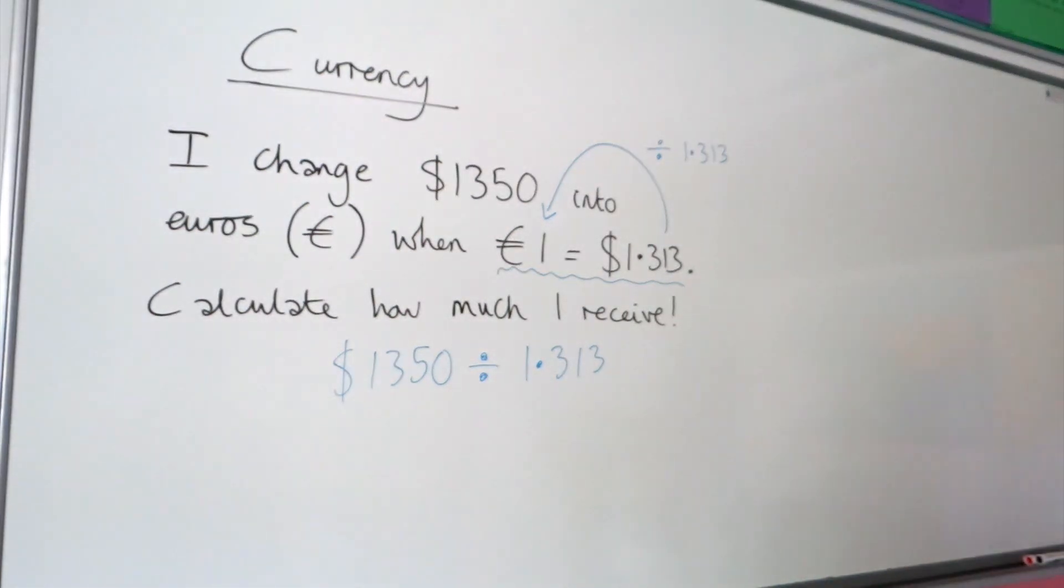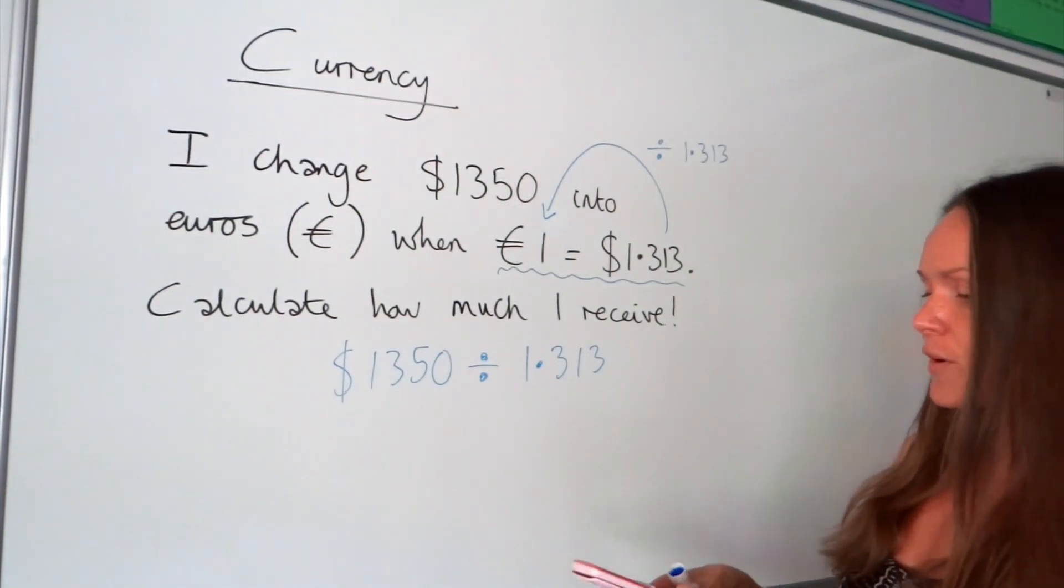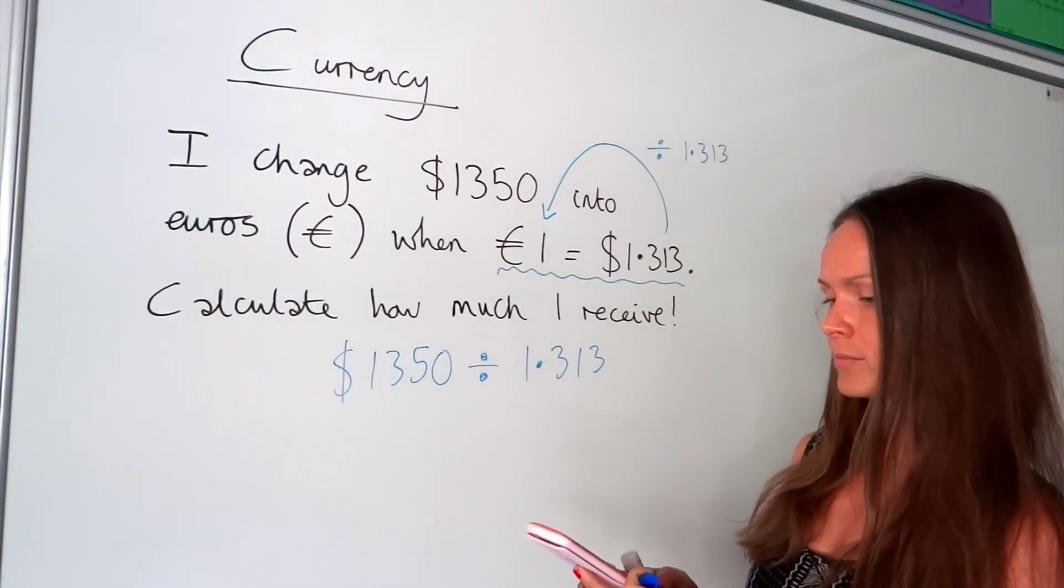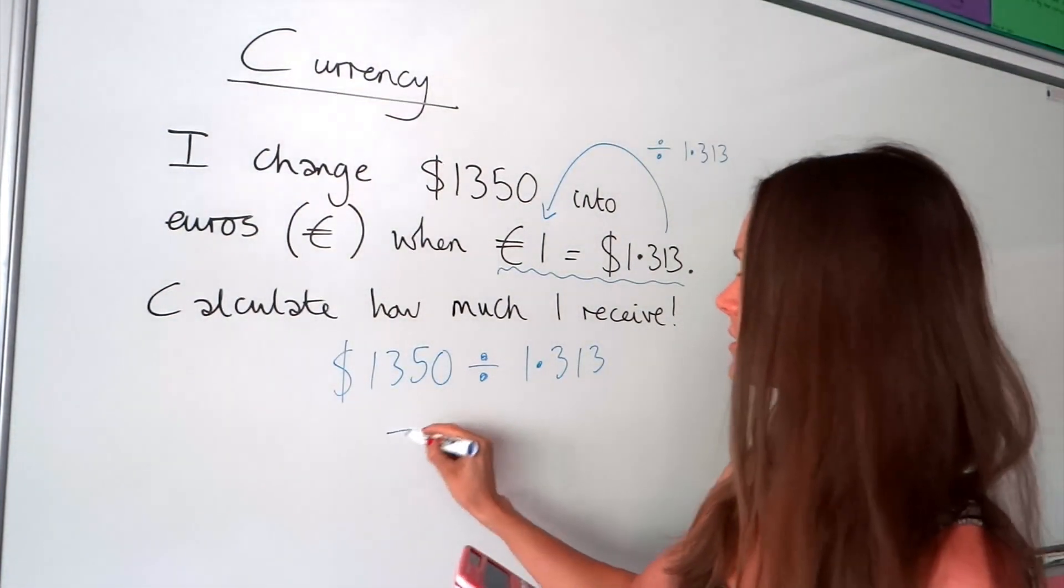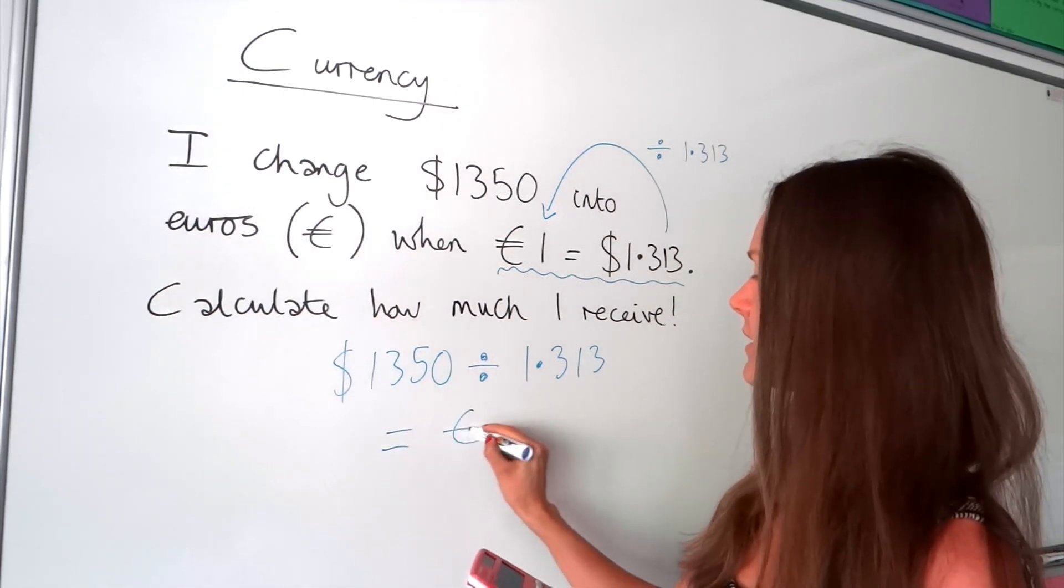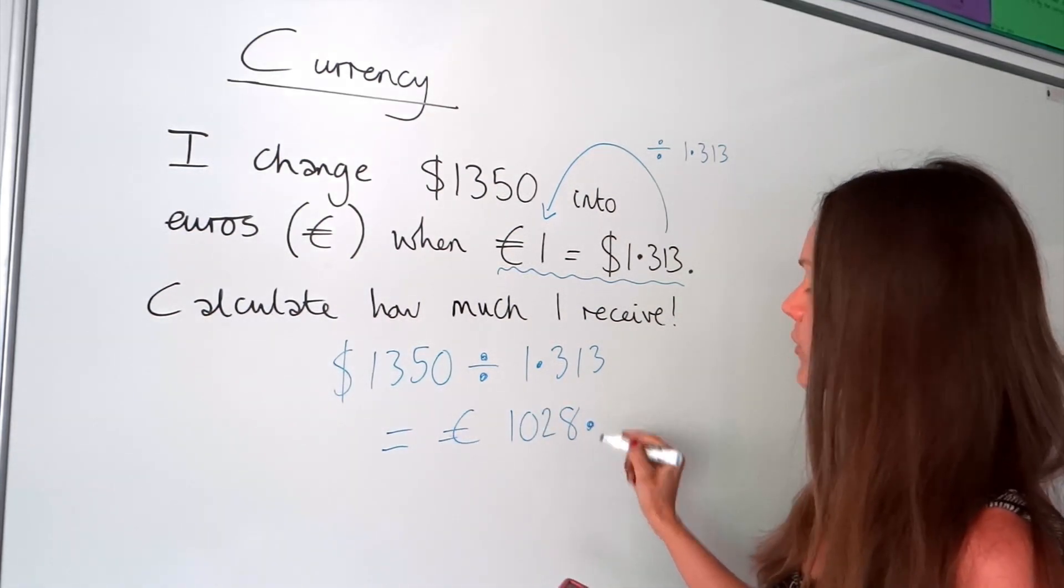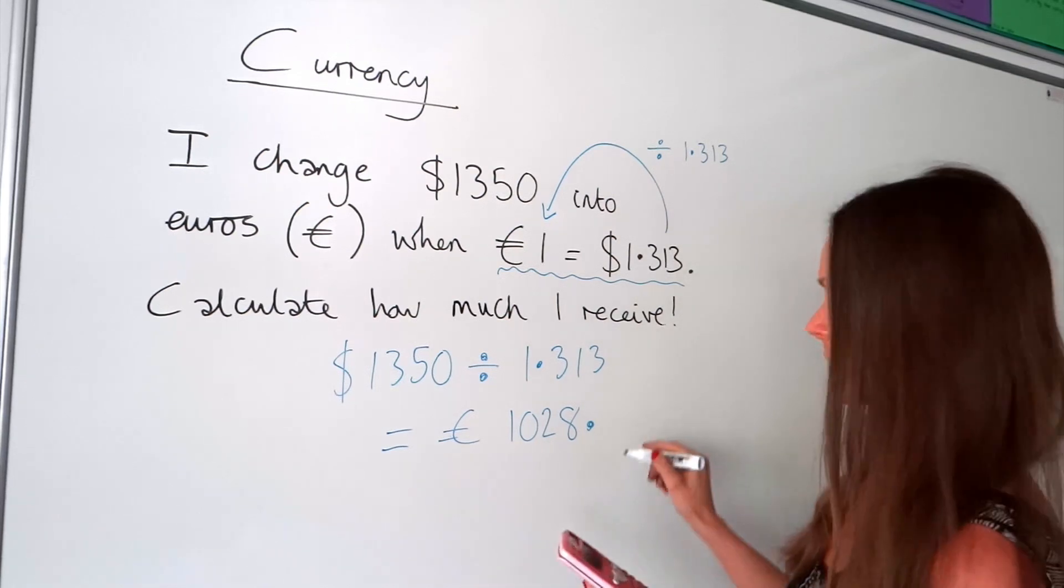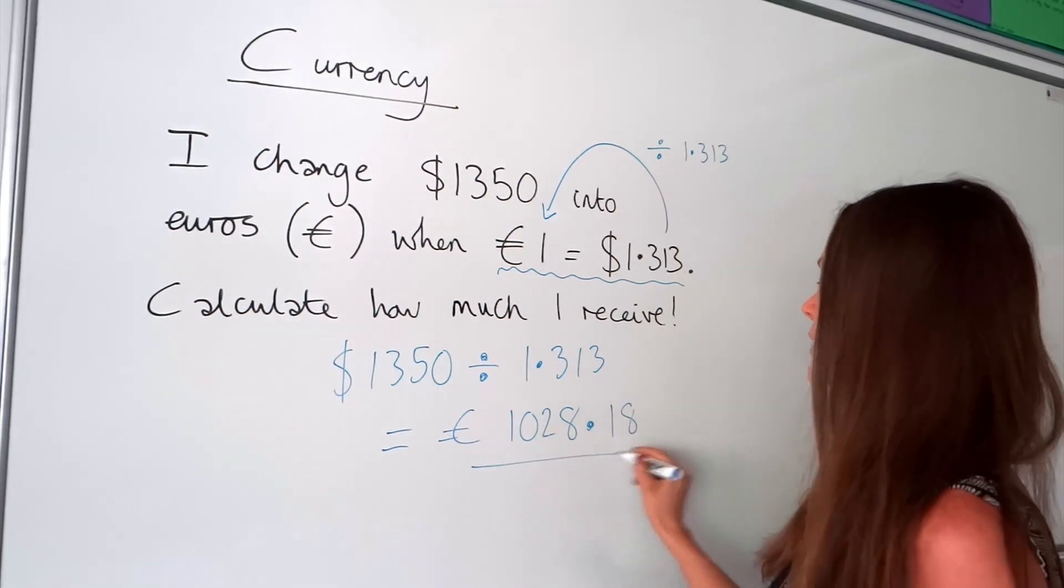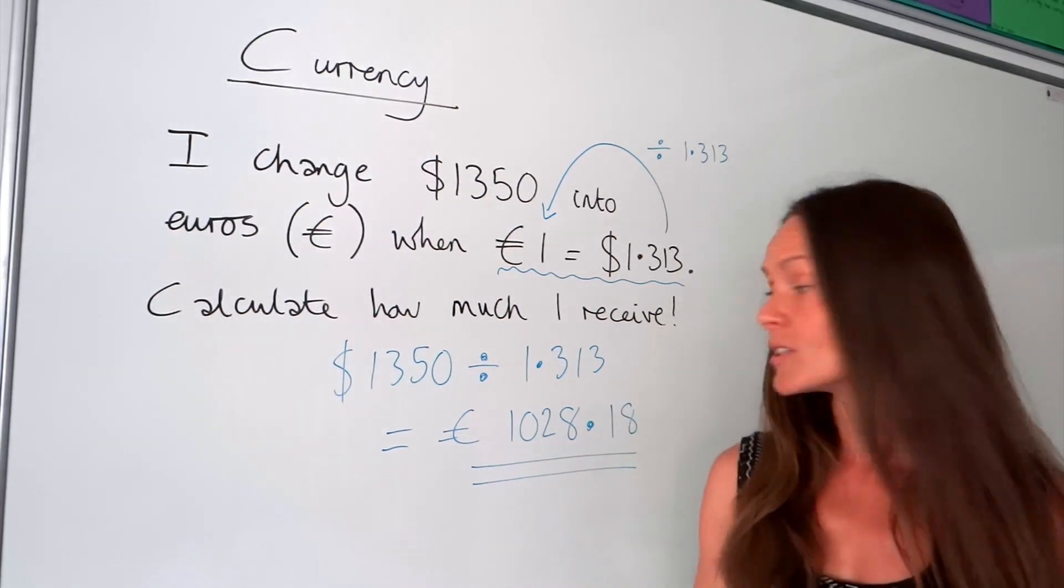And that will tell me how many euros I will get in exchange for my dollars. Take your calculator, divide those numbers. And the answer is, and remember this is now in euros, I'm going to round to two decimal places so that it's to the nearest centime. That's my euros that I get in return, €1,028.18.